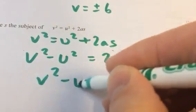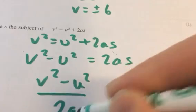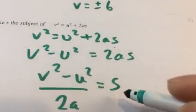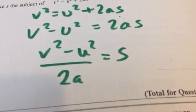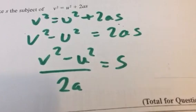So we're going to subtract the u squared, and then we're going to divide by 2a. So s equals v squared minus u squared all over 2a.